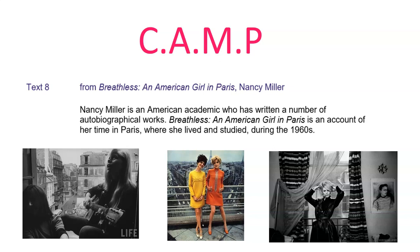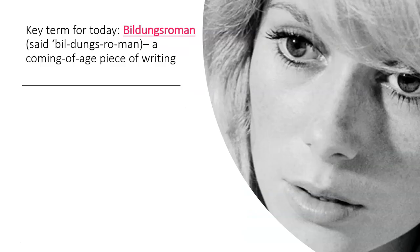If you haven't made notes already, please pause the video now and try to add as much detail as you can to your notes. Before you do that, here's a new key term — Bildungsroman. Bildungsroman is a word used to describe a piece of writing that is 'coming of age' — that moment between young adulthood and adulthood, a point in life where a person has some form of realisation, self-growth, and usually becomes an adult. It's a good term to use for this text.